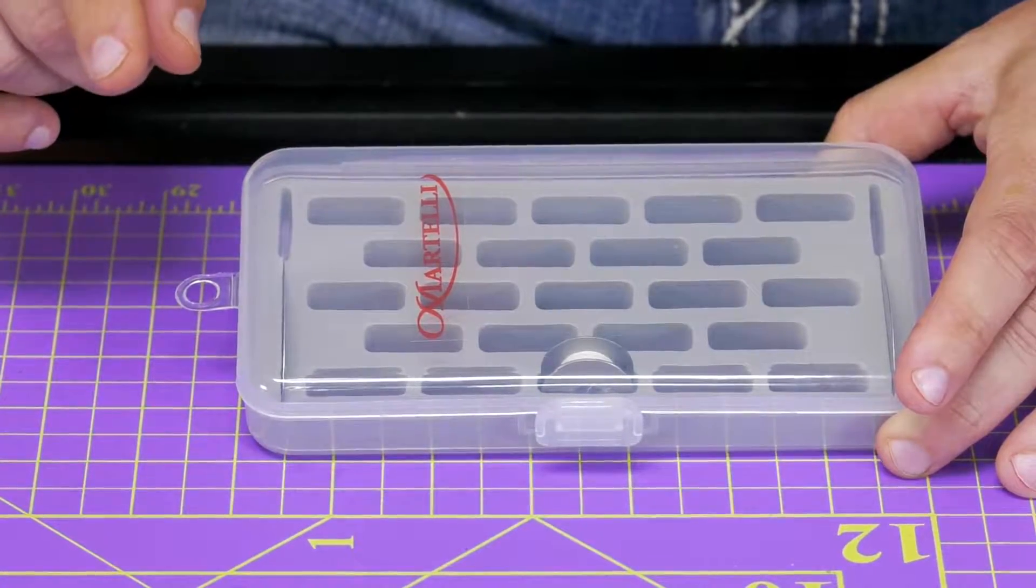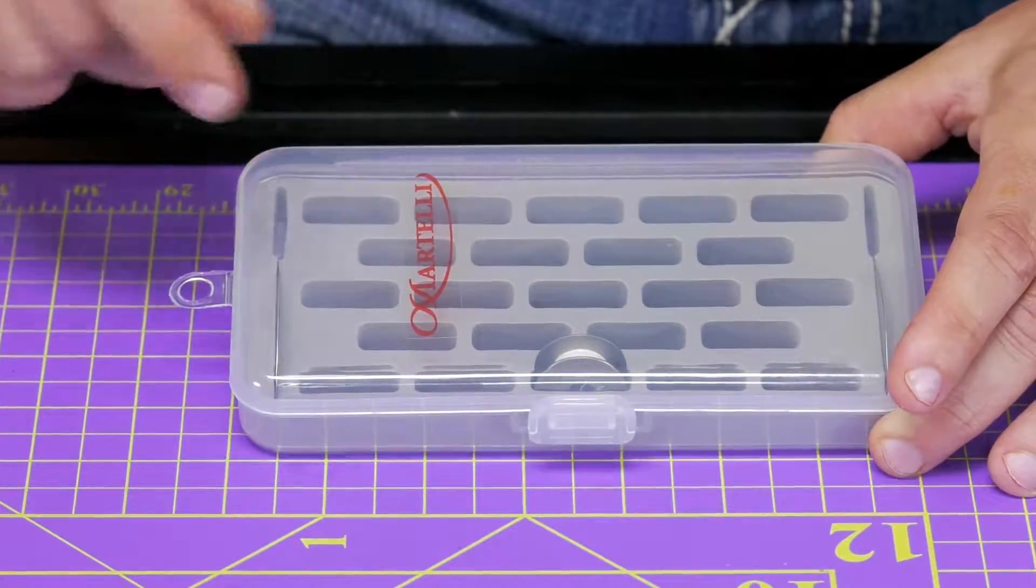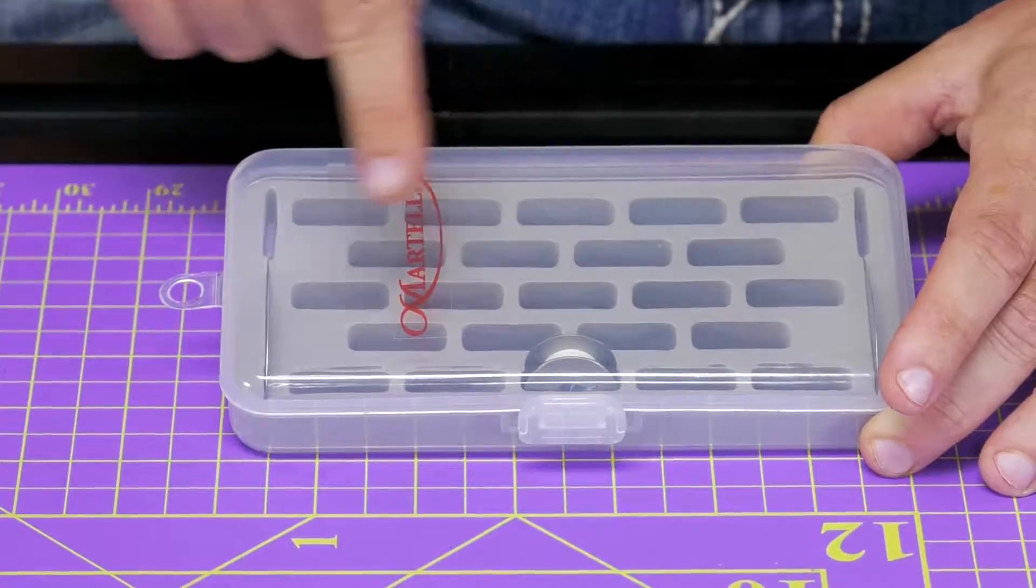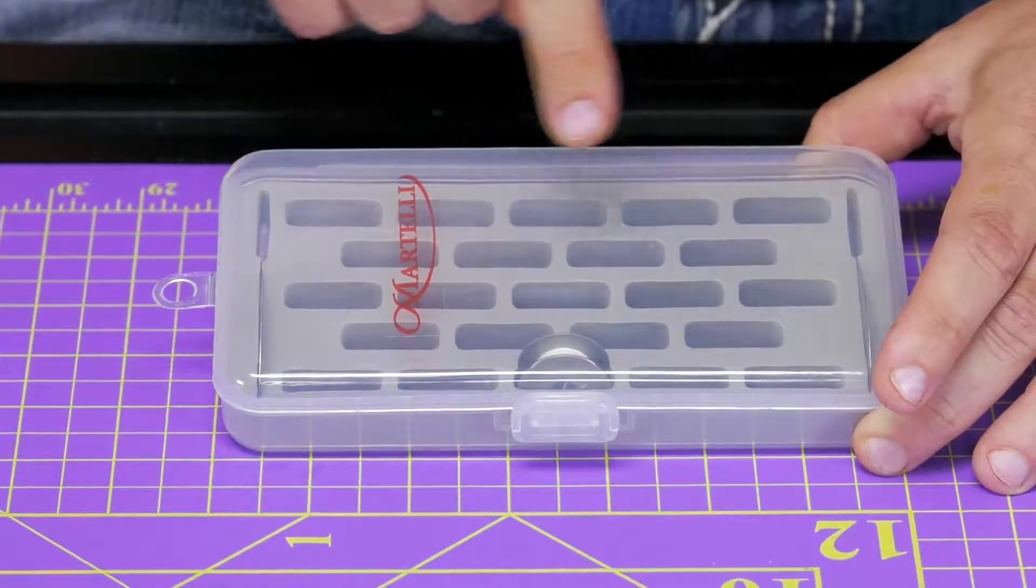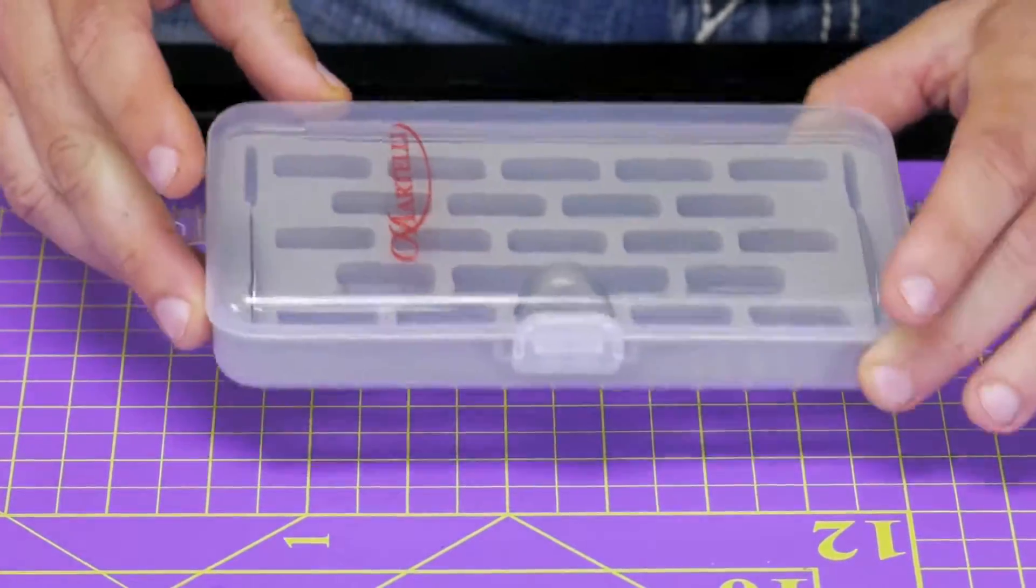You know how important it is when you're doing that long arm quilting to see that bottom thread. Now you can preload your bobbins and lay them out in order to what color combination that you want. It's easy, compact, and easy to store.